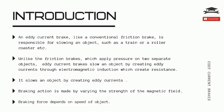To begin with, let me explain what an eddy current brake is. An eddy current brake, also known as an induction brake, electric brake or electric retarder, is a device used to slow or stop a moving object by dissipating its kinetic energy as heat. And most commonly used in trains and roller coasters.